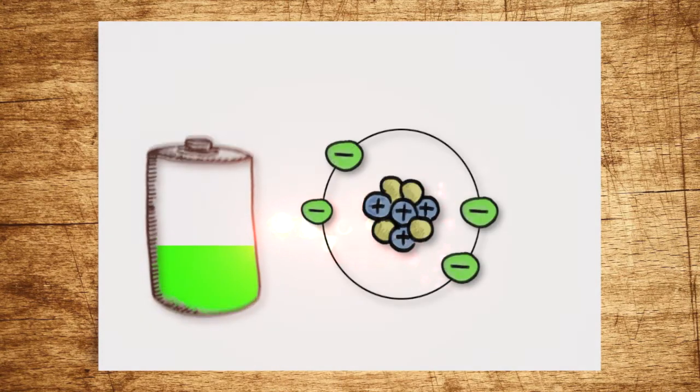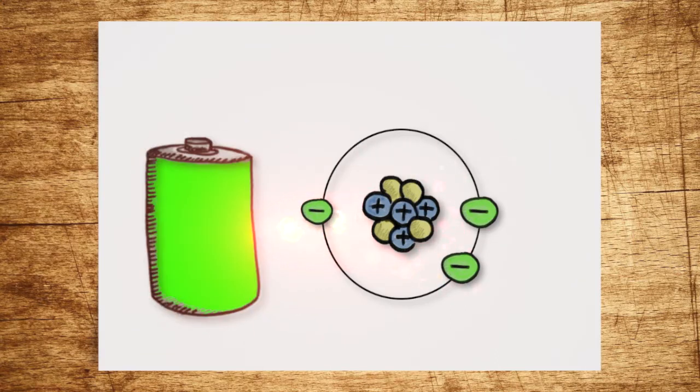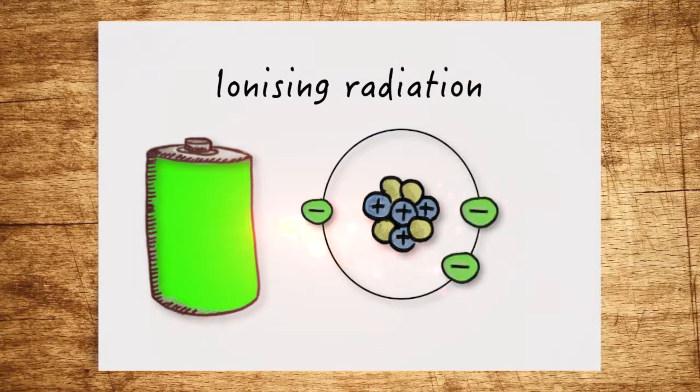X-rays have so much energy that they can break electron bonds, and in this way, alter matter itself. That's why they, along with alpha, beta, and gamma radiation, are types of ionizing radiation.